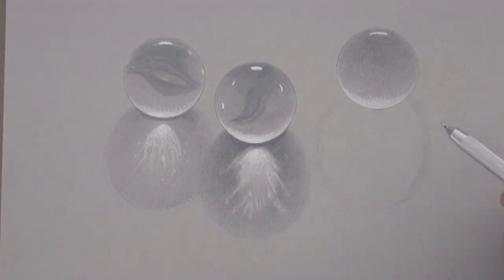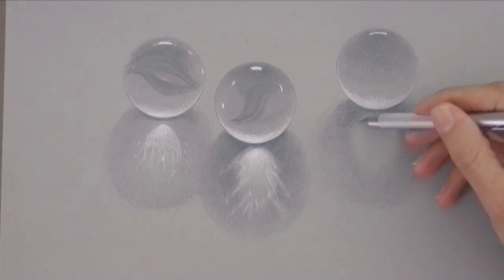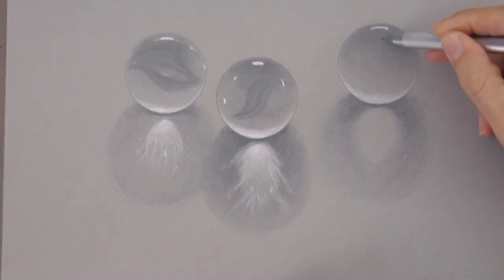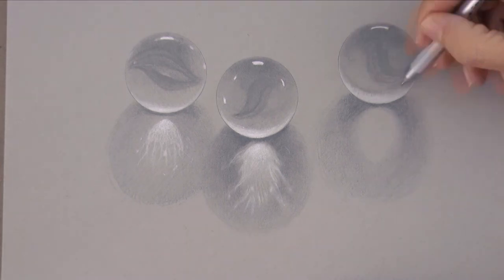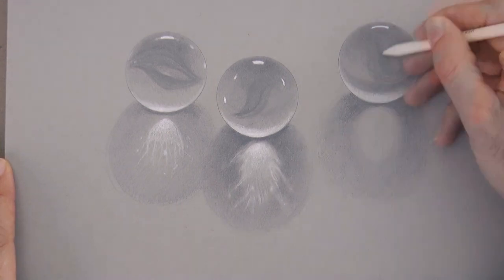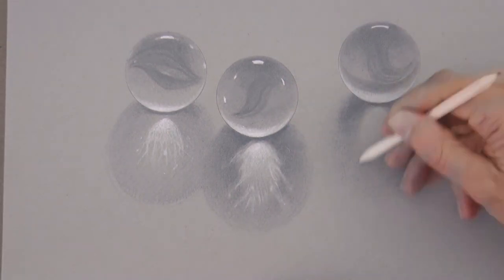We do the shadow, and again you can see the degradation of value, from darker on top of the sphere, going lighter toward the bottom, and with the lower part illuminated as hit by the light. In this case of the third marble, I am adding a darker area toward the bottom, as if it were reflecting something.